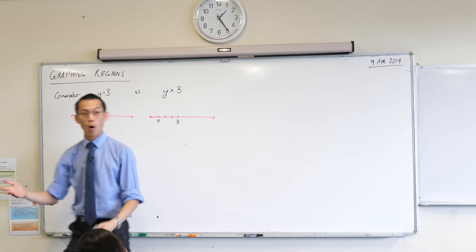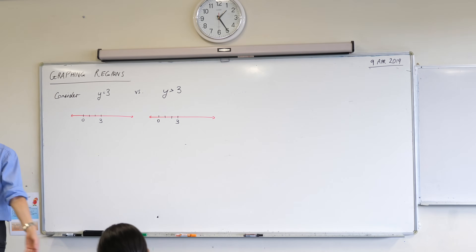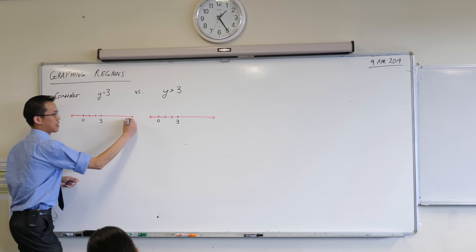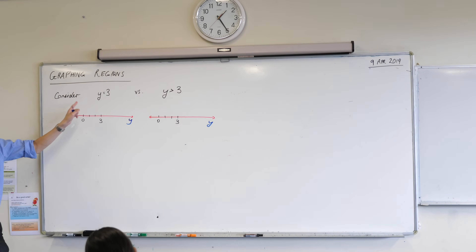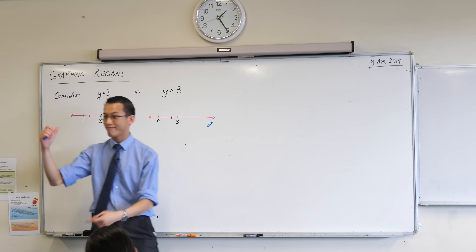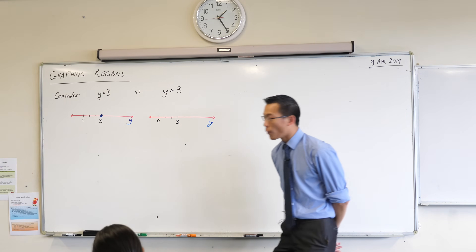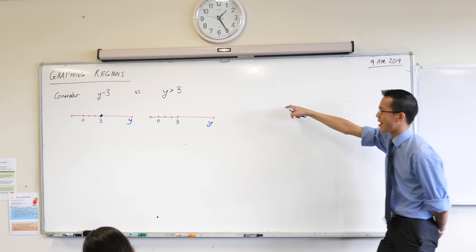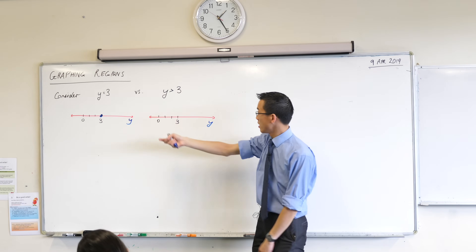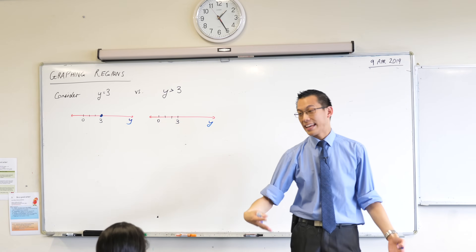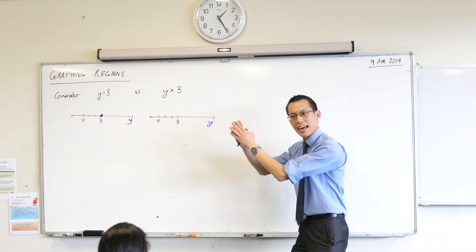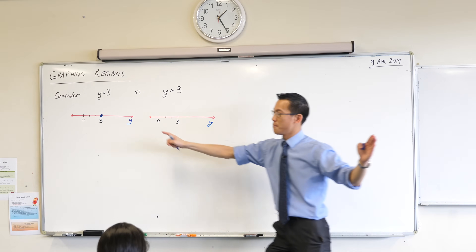So if this was the y number line, this guy here could be the t number line or the x number line or anything you like. If we said y equals 3, this is our y here, then to represent y equals 3 — this one point — we just put a big fat dot on 3. But when you have a look at an inequality like this guy on the right-hand side, y is not just a particular number, it's a whole bunch of numbers. It could be 4 or 5 or 8 or a million or 3.001.